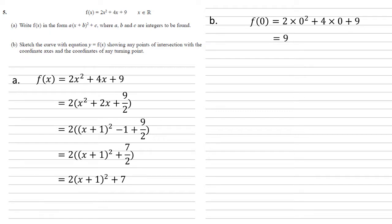The smallest that (x + 1)² can get is when x + 1 = 0. This is going to happen at x = -1. If x + 1 is 0 then f(x) = 2(0) + 7 = 7. Our minimum point is going to be (-1, 7).